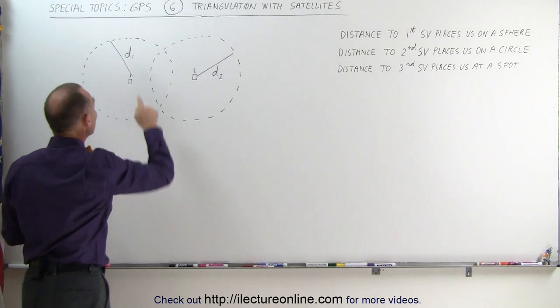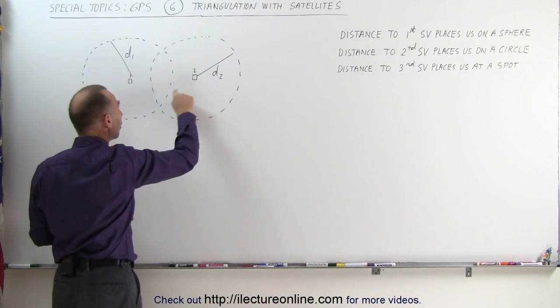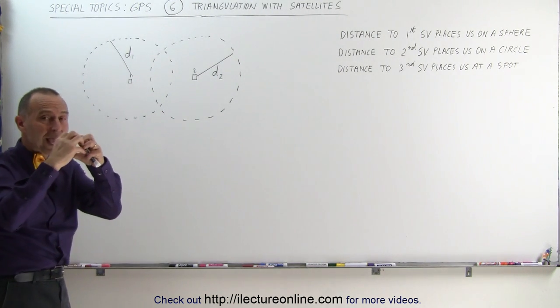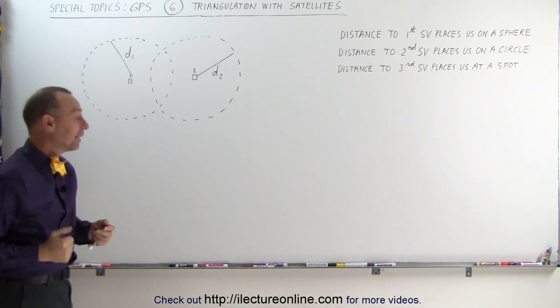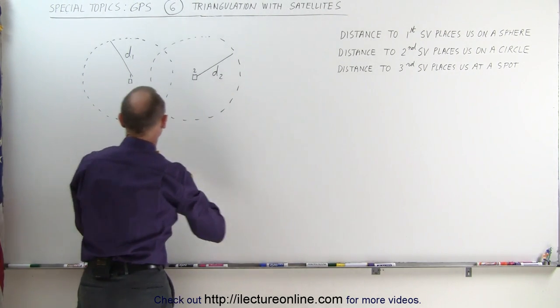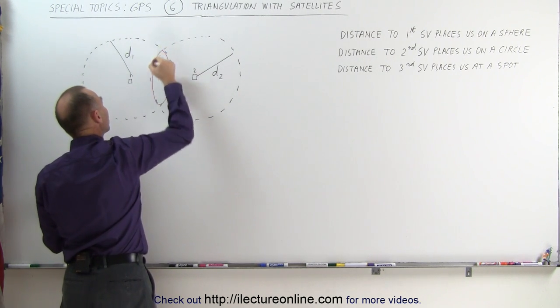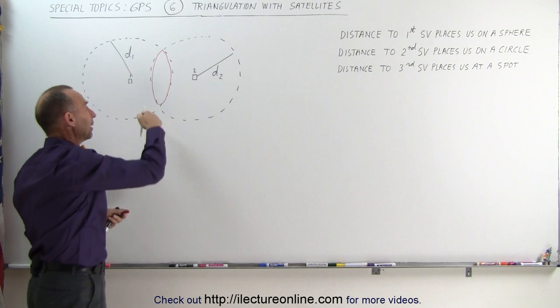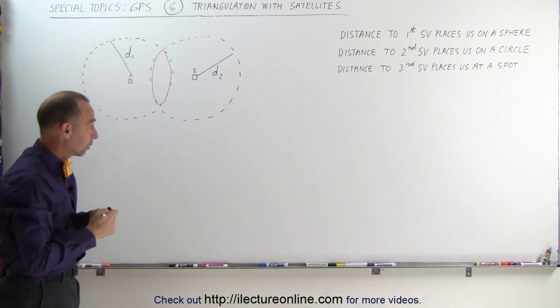Now we draw a second sphere around the second satellite. So let's say that our second satellite, we know the location is right there and we know we're a distance D2 away from that satellite. That means if we're a distance D1 from the first satellite and a distance D2 from the second satellite, wherever the two spheres overlap, that's where a circle is formed. We must now be somewhere on that circle. There must be some sort of circle where the two spheres overlap. Now it places us anywhere on that circle, but we don't know yet exactly where on the circle.